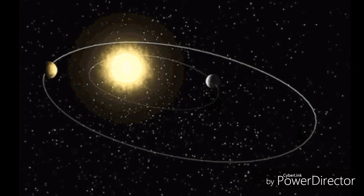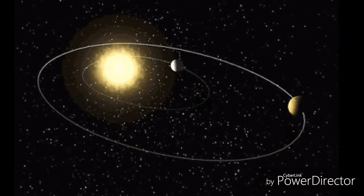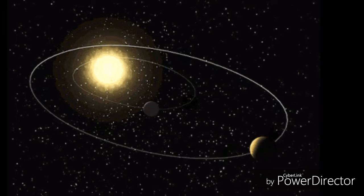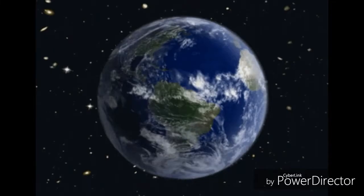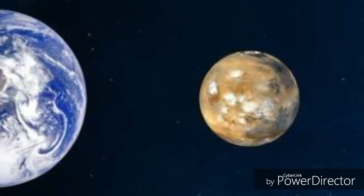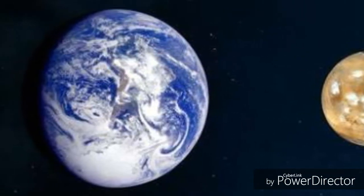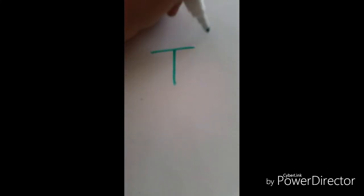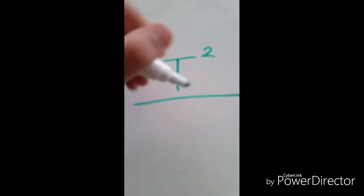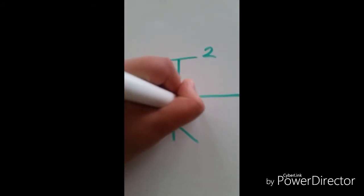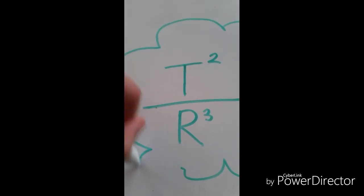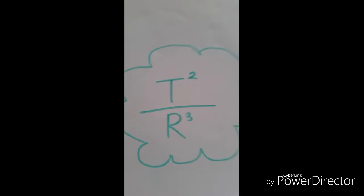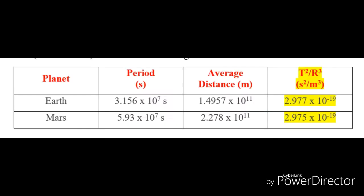Kepler's third law, or the law of harmonies, compares the orbital period and radius of the orbit of a planet to those of other planets. Unlike Kepler's first and second laws that describe the motion characteristics of a single planet, the third law makes a comparison between the motion characteristics of different planets. The comparison being made is that the ratio of the squares of the periods to the cubes of their average distances from the sun is the same for every one of the planets. As an illustration, consider the orbital period and average distance from the sun for Earth and Mars as given in the following table.